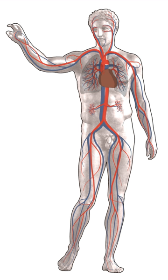Arterial diseases include aortic aneurysms, dissection, and arteries supplying the legs, hands, kidneys, brain, and intestines. It also covers arterial thrombosis and embolism, vasculitides, and vasospastic disorders.